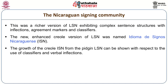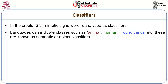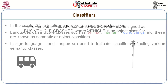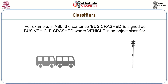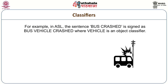The growth of ISN from LSN can be shown with respect to the use of classifiers and verbal inflections. In the creole ISN, the mimetic signs were re-analyzed as classifiers. Language can indicate classes such as animal, human, round things, etc. — these are known as semantic or object classifiers. In sign language, hand shapes are used to indicate classifiers reflecting various semantic classes. For example, in ASL, 'bus crashed' is signed as 'bus + vehicle + crashed', where 'vehicle' is the object classifier.